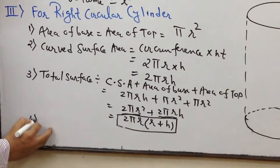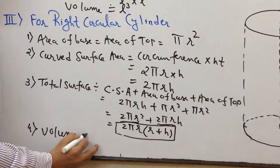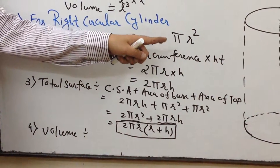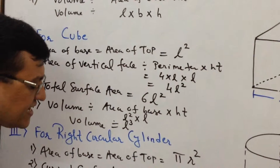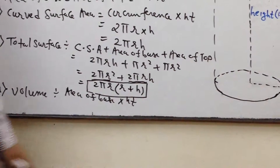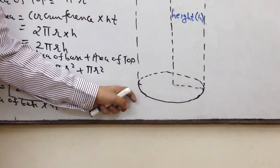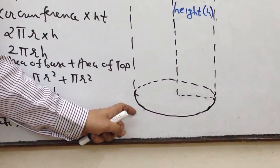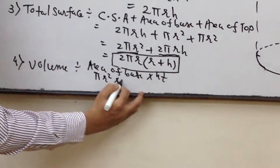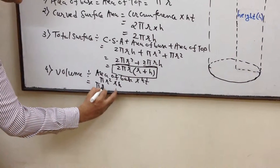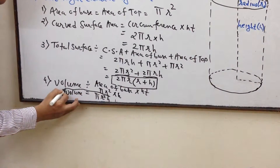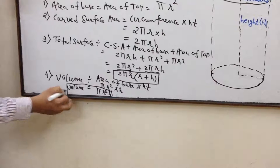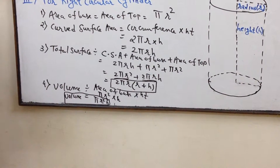Finally, to go with volume. Though the figure has changed, the concept remains the same: volume is area of base into height. The base is nothing but a circle, and the area of a circle is πr². So volume equals πr² into h, which is πr²h. The volume of a cylinder is πr²h.